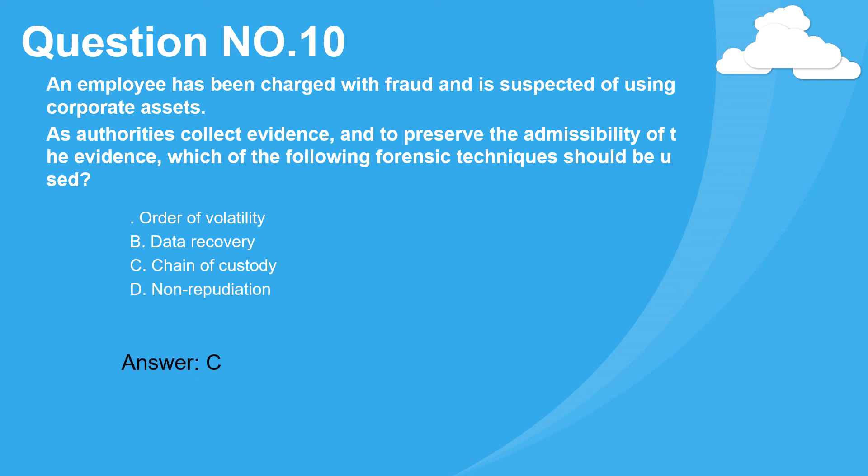Question number ten. An employee has been charged with fraud and is suspected of using corporate assets. As authorities collect evidence, and to preserve the admissibility of the evidence, which of the following forensic techniques should be used? A. Order of volatility. B. Data recovery. C. Chain of custody. D. Non-repudiation. Answer: C.